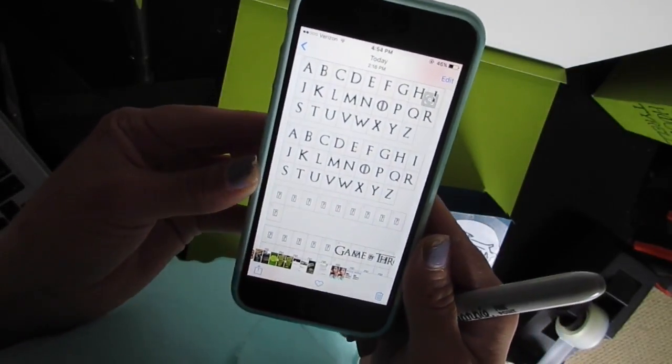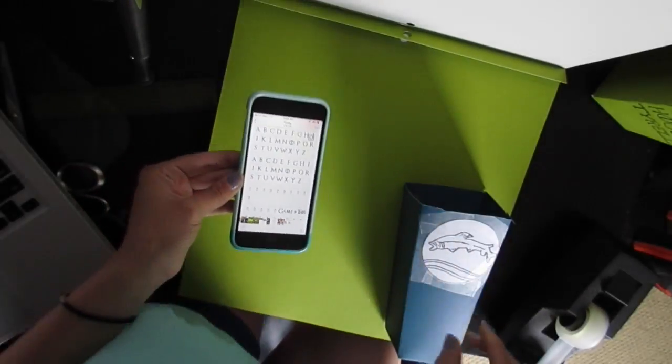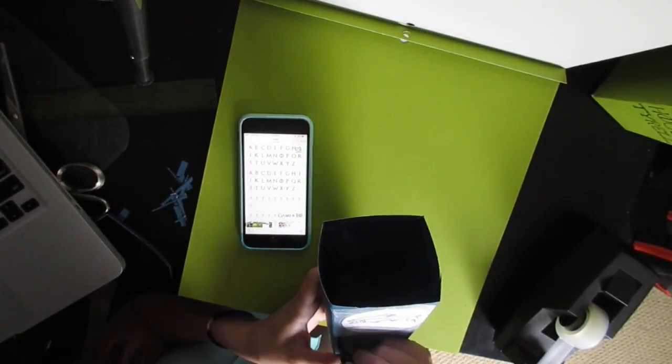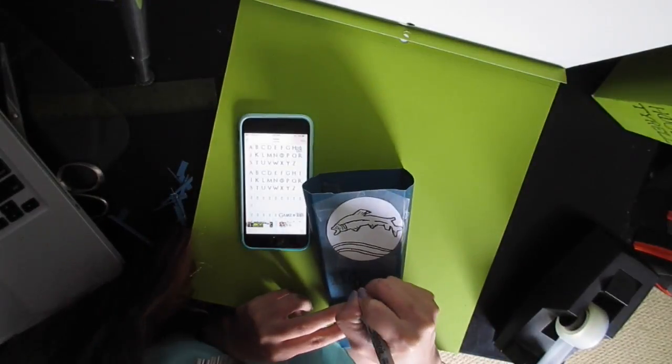Look up the Game of Thrones font. After that, write 'House of' whatever house you chose.